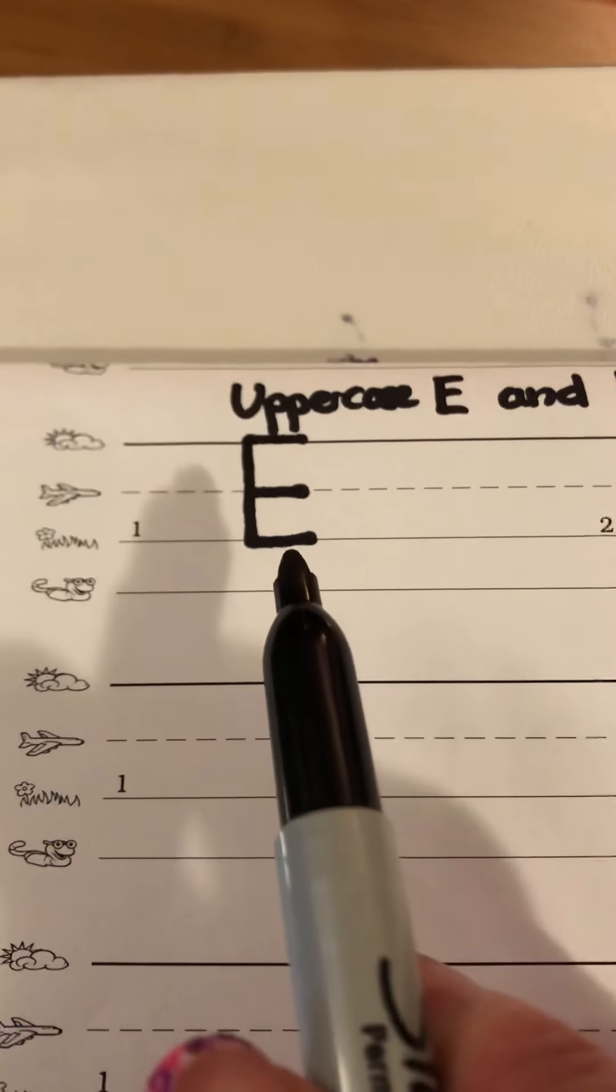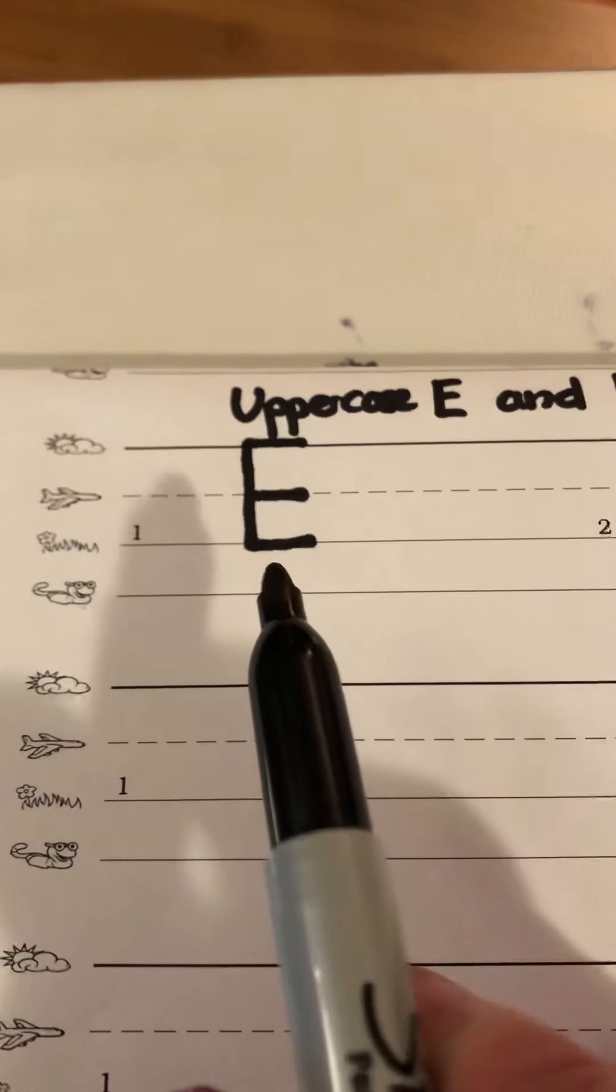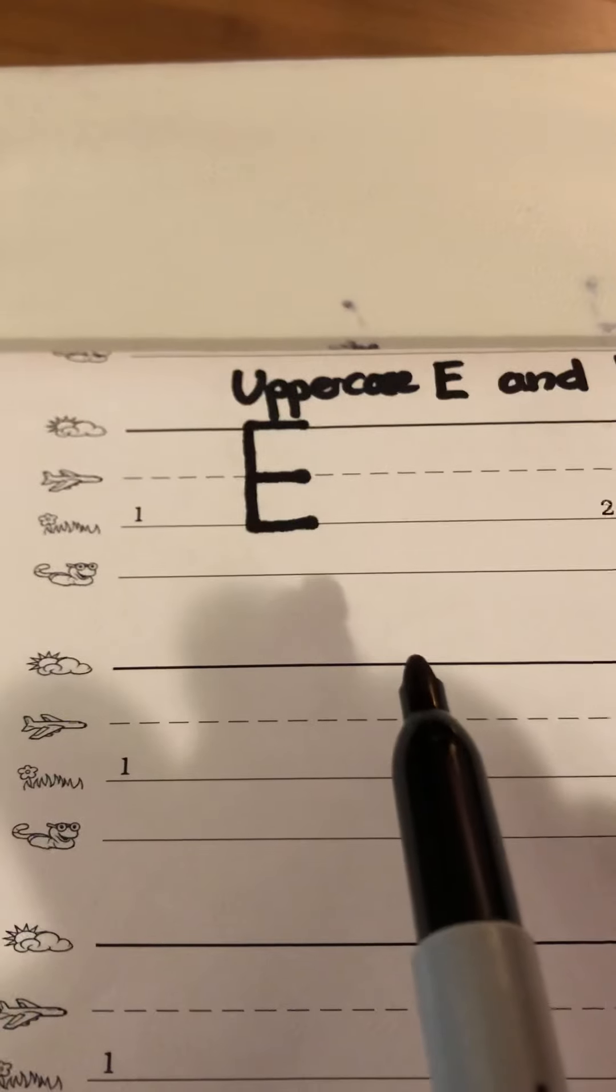E is a vowel which means our mouth comes open when we make the sound. Your voice box is turned on and it's a stretchy sound.